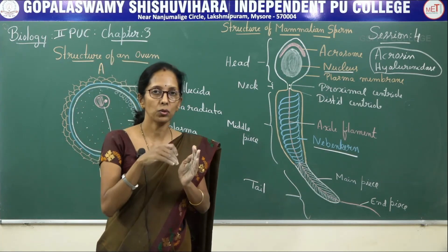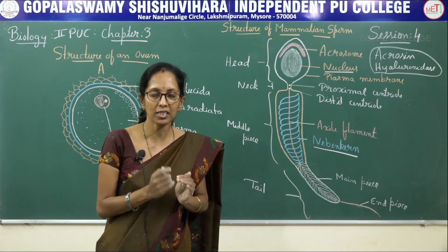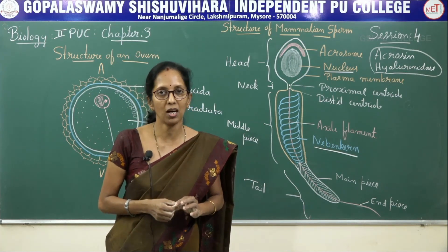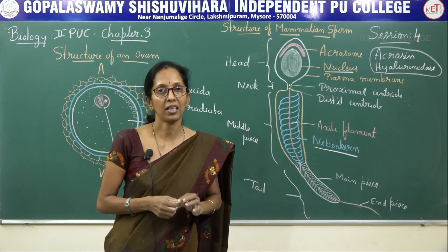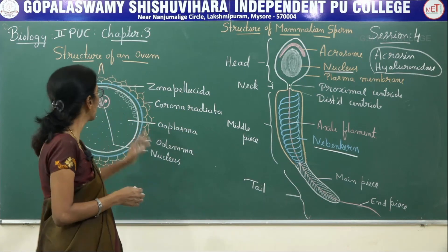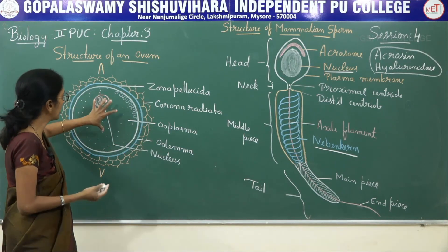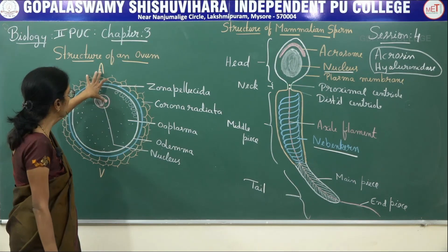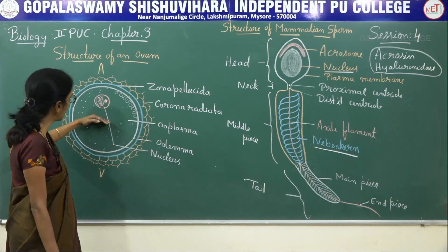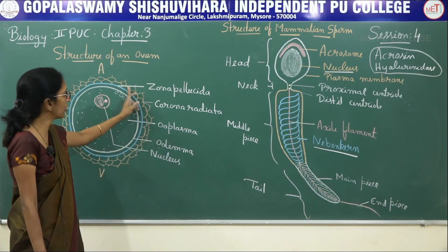The egg is surrounded by zona pellucida and corona radiata, and this structure is present in a bed of follicle cells called cumulus oophorus. There is a presence of a large cavity called the antrum, which in turn is surrounded by membrana granulosa — a multicellular layer that gives protection — which is covered by theca interna and theca externa. Coming to the structure of an ovum: it is a female gamete synthesized in the ovary, spherical or oval in shape, differentiated into animal and vegetal pole. The liquid is said to be ooplasm, the plasma membrane is said to be oolemma, the nucleus is found towards the animal pole, and the cortical granules are present towards the peripheral region, surrounded by zona pellucida and corona radiata.